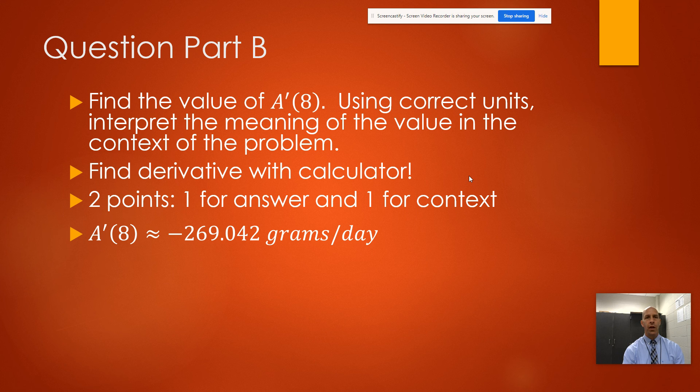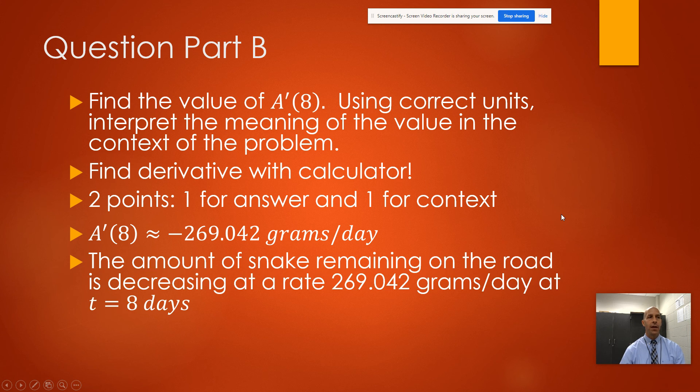It turns out that A'(8) is negative 269.042 grams per day. One point is for actually finding A'(8).